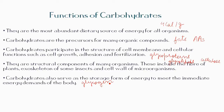Glycogen is a polymer of glucose where glucose molecules are joined together by alpha-1,4 glycosidic bonds. It is present in high concentration in the liver, followed by muscle and brain. Glycogen is also found in plants that do not possess chlorophyll, such as yeast and fungi.